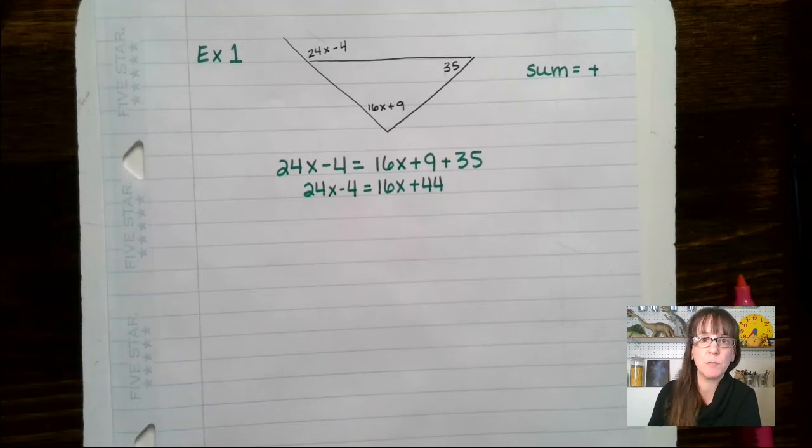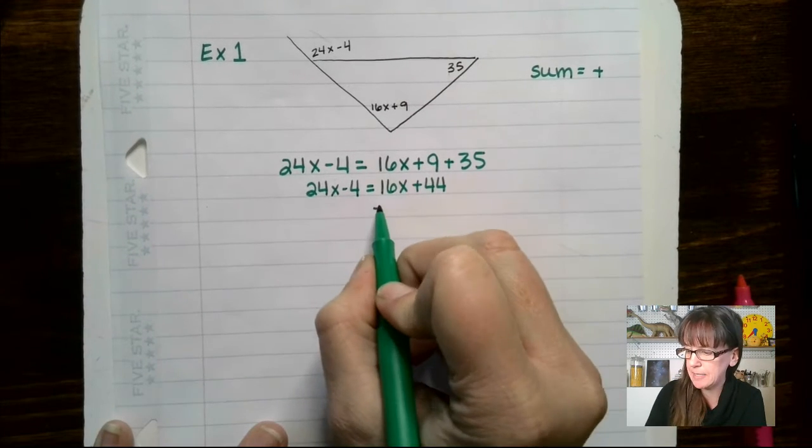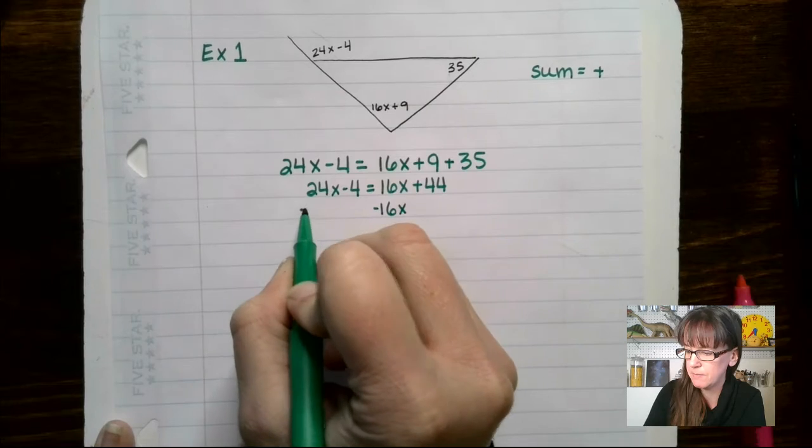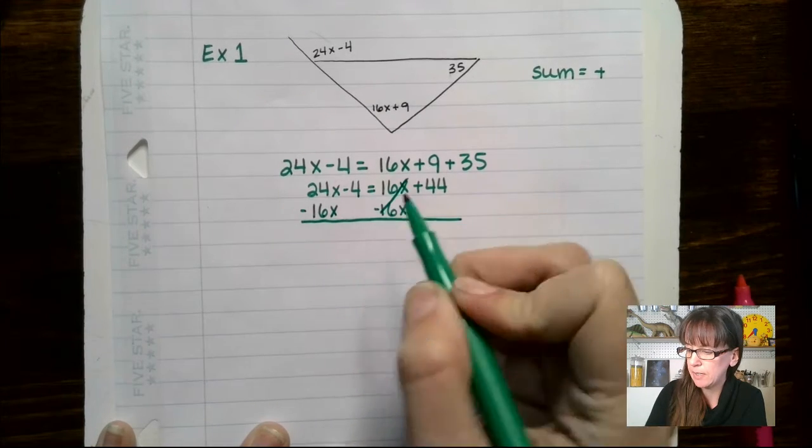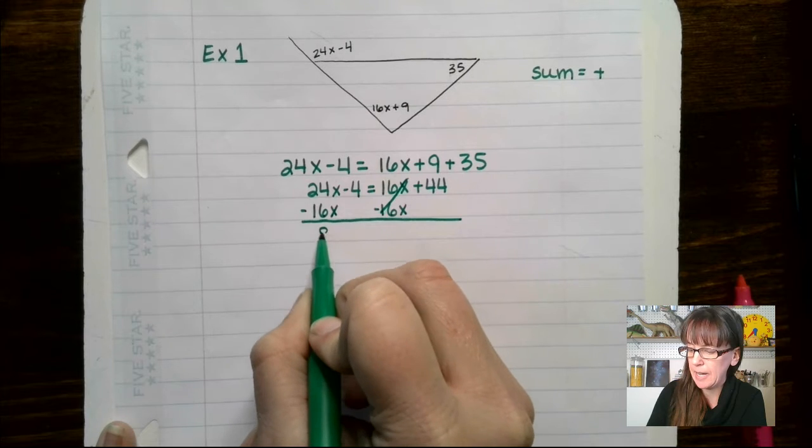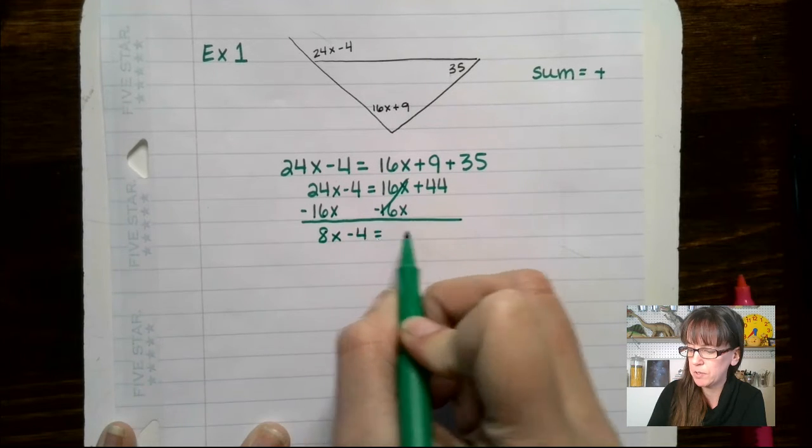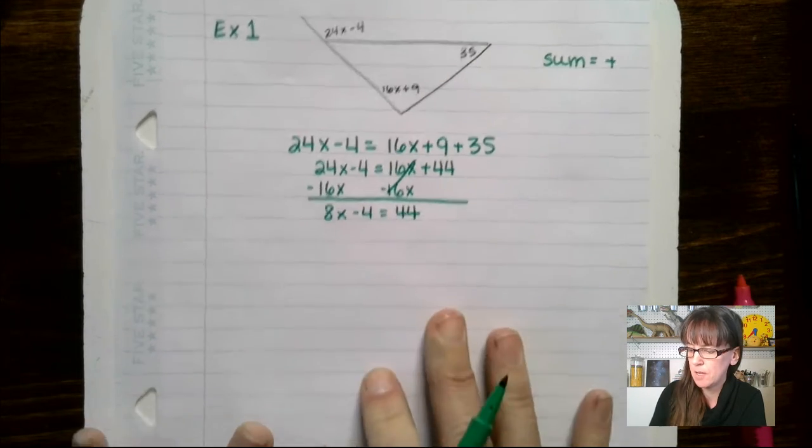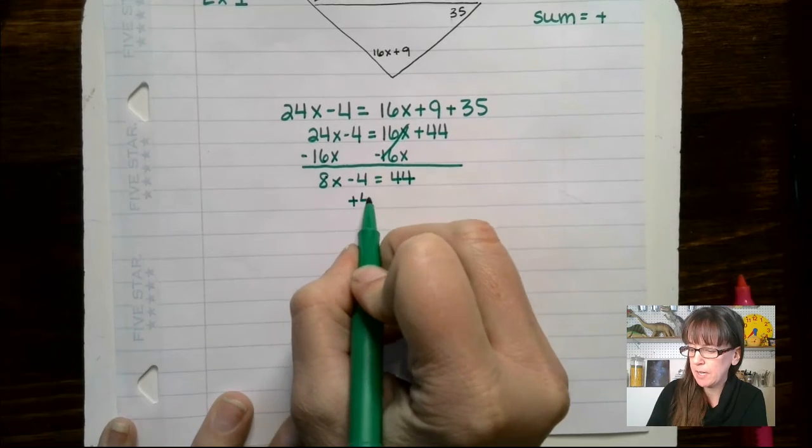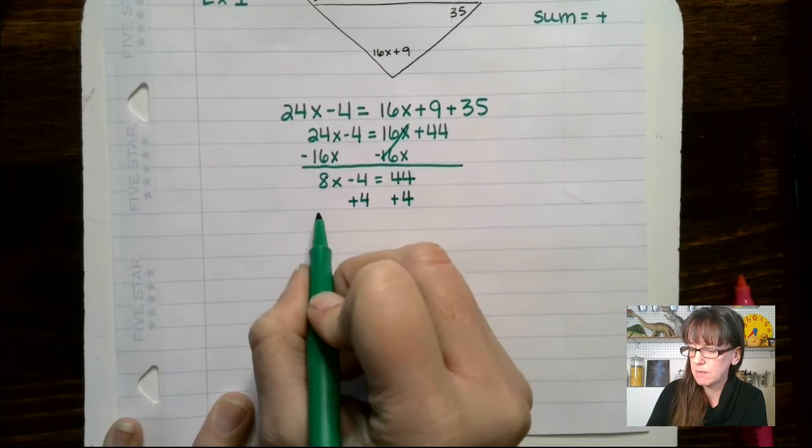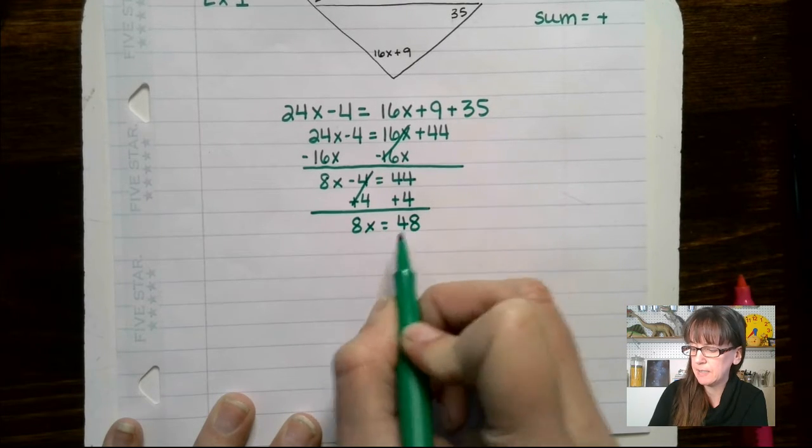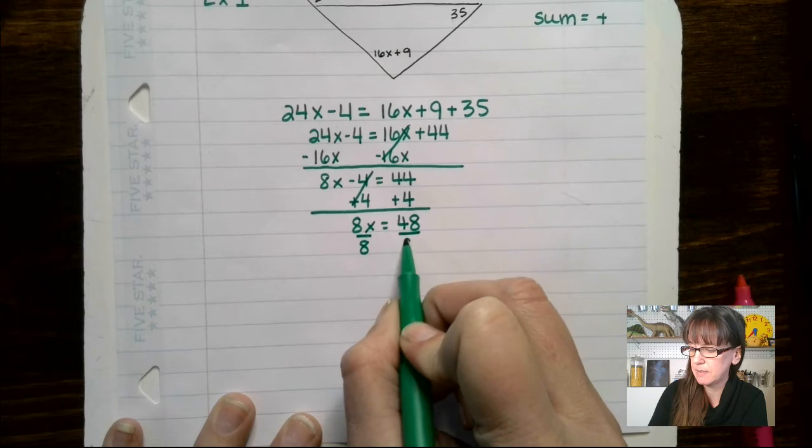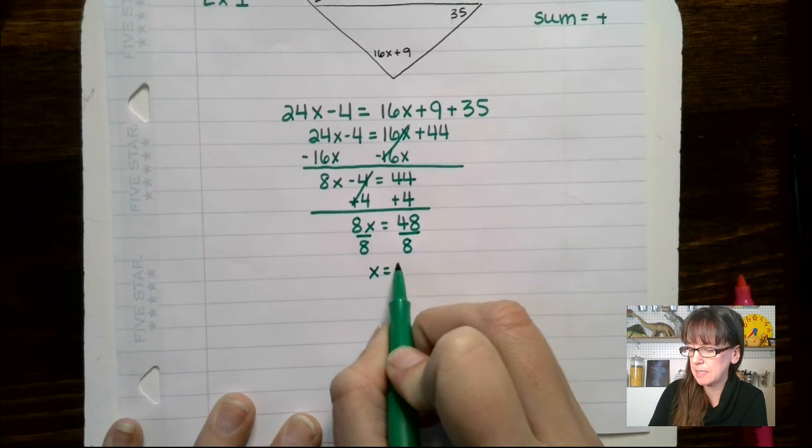Let's combine our like terms by moving things left and right. So we're going to minus 16x from both sides. That will give us 8x minus 4 equals 44. Add 4 to both sides. We get 8x equals 48. Divide both sides by 8. And we end up with x equals 6.